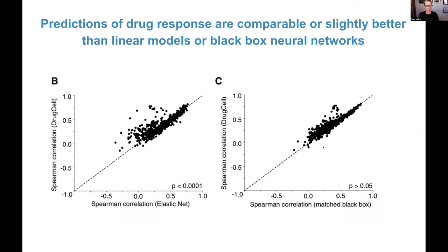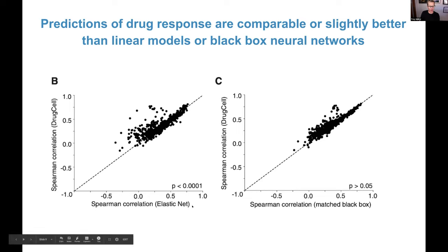Let's look at predictive performance. Comparing the model's correlation between predicted growth response of a cancer cell to a drug over those 500,000 data points versus elastic net and a matched black box model, for most drugs DrugCell performs about the same as other models. But there is a population of drugs where the interpretable model does better, and that's true for both comparisons.